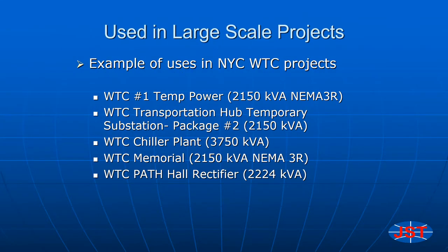When the new Freedom Tower was constructed at One World Trade Center in New York City, cast epoxy resin transformers were specified in many of the applications, as commonly seen in such large-scale, high-profile infrastructure projects. During the initial construction, JST cast resin transformers were used for the temporary power and the transportation hub substation. Other applications in this project benefiting from the deployment of JST transformers included the chiller plant which provided cooling for a multitude of users, the World Trade Center Memorial, and the PATH subway hall rectifier transformer.